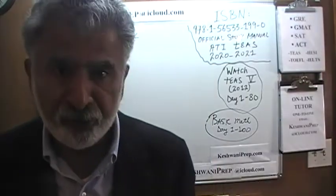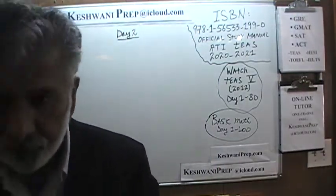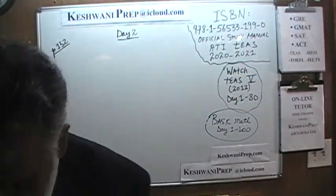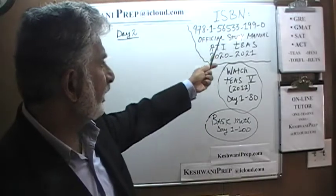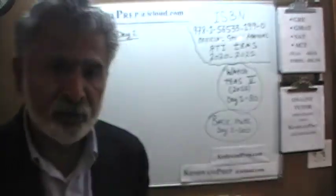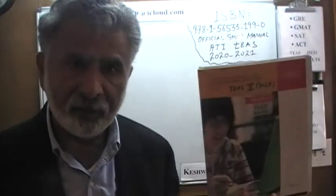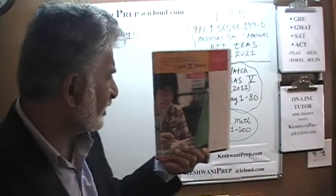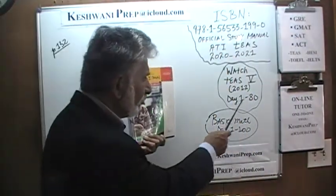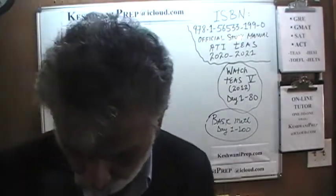We began this series yesterday; today is only day number 2. Yesterday I introduced this book to you, and on the blackboard as you can clearly see, you will find the ISBN number and the title and so forth. I am not going to go over all of that again. In addition to these videos, if you need some extra help or want more material, you will find the original series of TEAS 5 videos which came out in 2012. There are a series of 80 videos, day 1 through 80, and you can avail yourself of those as well.